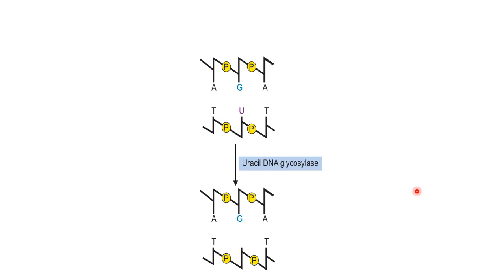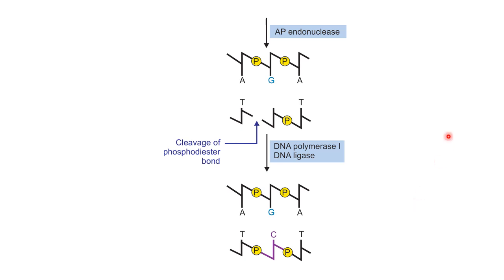After the action of uracil DNA glycosylase and creation of the apyrimidinic site, another enzyme called apyendonuclease acts. This apyendonuclease enzyme removes the DNA strand containing the apyrimidinic site by cleavage of the phosphodiester bond. The gap is then filled by DNA polymerase 1 and DNA ligase enzyme. This is all about base excision repair, which involves DNA glycosylase, apyendonuclease, DNA polymerase 1, and DNA ligase.